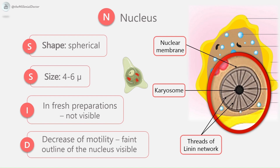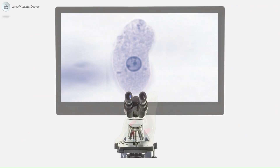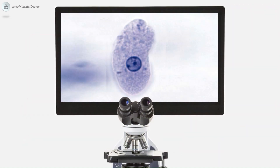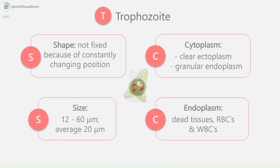In fresh preparations, the trophozoite is not visible due to rapid movement, but with decrease of motility, the faint outline of the nucleus becomes visible. This is the structure of the trophozoite as viewed under a microscope. These are the important characteristics of the trophozoite to remember.